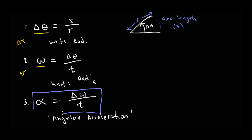Alpha is analogous to linear acceleration a. So: delta x is analogous to delta theta — displacement and angular displacement. V is analogous to omega — linear speed and angular speed. A is analogous to alpha — linear acceleration and angular acceleration. We can see that this parallels very much what we did at the beginning of the year back in September.